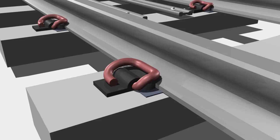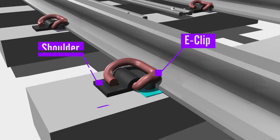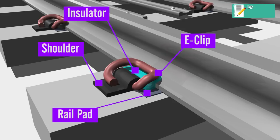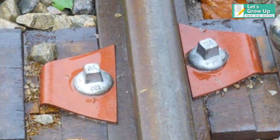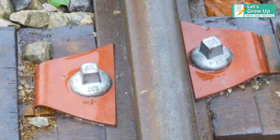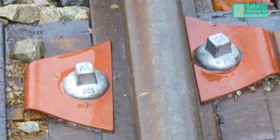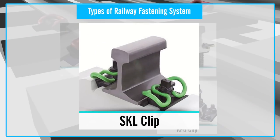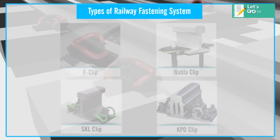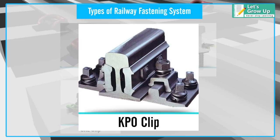For example, the E-type fastening system, which is made up of an E-clip, shoulder, rail pad, and insulator. The Nabla rail fastening system is a safe and reliable railway fastening system most widely used in Europe. Other types include the SKL rail fastening system, the KPO rail fastening system, and so on.